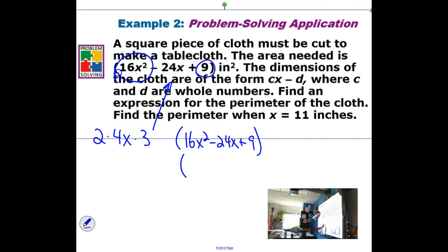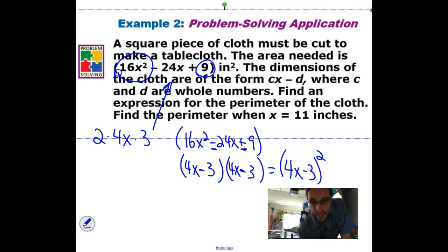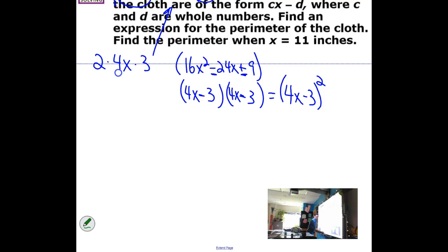I can say, hey, all right, 4X, 4X. This means they have the same sign. This means both of those signs are negative. Minus 3, minus 3. Oh, right. 4X minus 3 squared. Sweet. I factored it. In fact, I know that each side length is 4X minus 3. So, our side is equal to 4X minus 3.